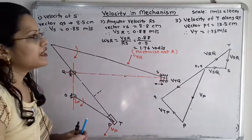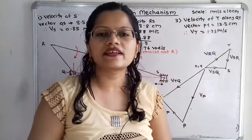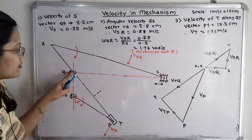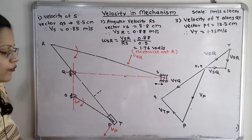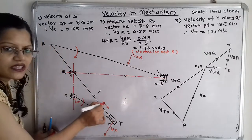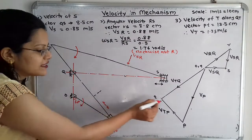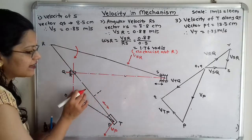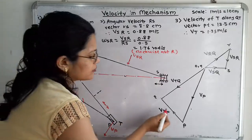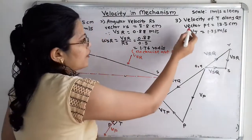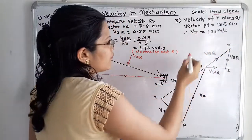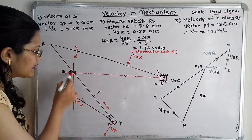The third answer is the velocity of T along link QT. Slider T oscillates along bar QT, and in the velocity diagram the vector P to T is parallel to this motion. We measure vector p to t as 13.5 cm. Using the scale 1 m/s = 10 cm, the velocity of T is 1.35 m/s along the link Q to T.